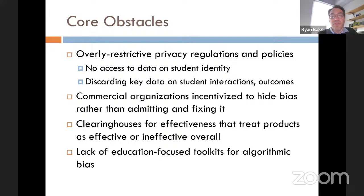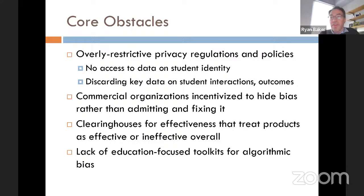There are also clearinghouses for effectiveness — such as the What Works Clearinghouse and Evidence for ESSA in the United States — that treat products as effective or ineffective overall, rather than saying a technology has been demonstrated to work in wealthy cities in the Northeastern US but not elsewhere. If clearinghouses broke out evidence by 'effective for whom,' that would go a long way toward identifying algorithmic biases.